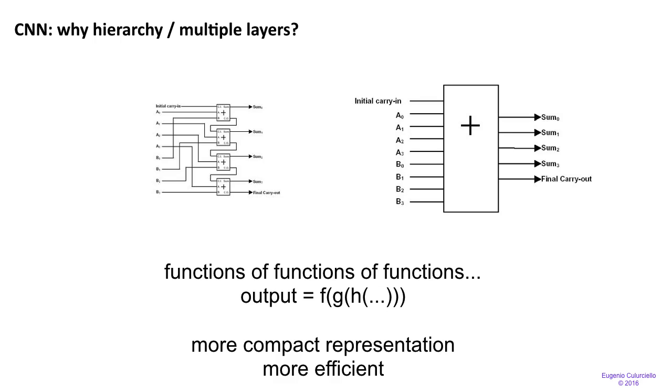So why this hierarchy in the CNN? Why these multiple layers? For the circuit people among you or the more mathematical people among you, we can see that a function of function of function, which is what the hierarchy gives—stacking multiple layers of neural networks on top—provides a more compact representation, more efficient. In the same way that in circuits we always create blocks and we compose larger circuits by replicating the small blocks in a hierarchy. This simplifies the analysis and also makes it more efficient.